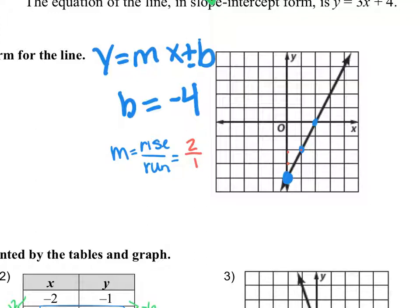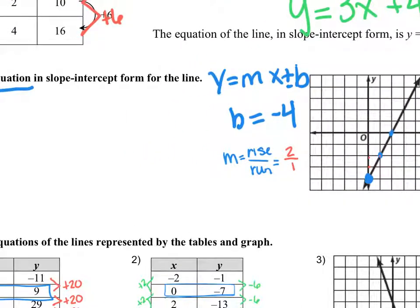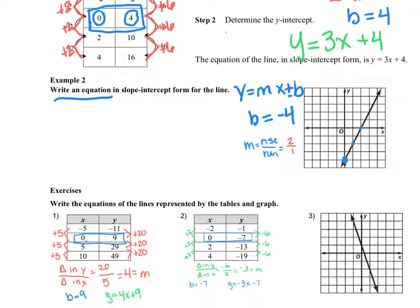Now when I write this into my equation, I don't need to have 2 over 1. But if it's a fraction, I would keep the fraction. But if it's 2 over 1, it's just a whole number. I'm going to drop that 1 off. So my equation for this line would be y equals what? 2x. 2x minus 4. Perfect. Yeah, 2x minus 4. Good job. So 2 is the slope. Negative 4 is my y-intercept.